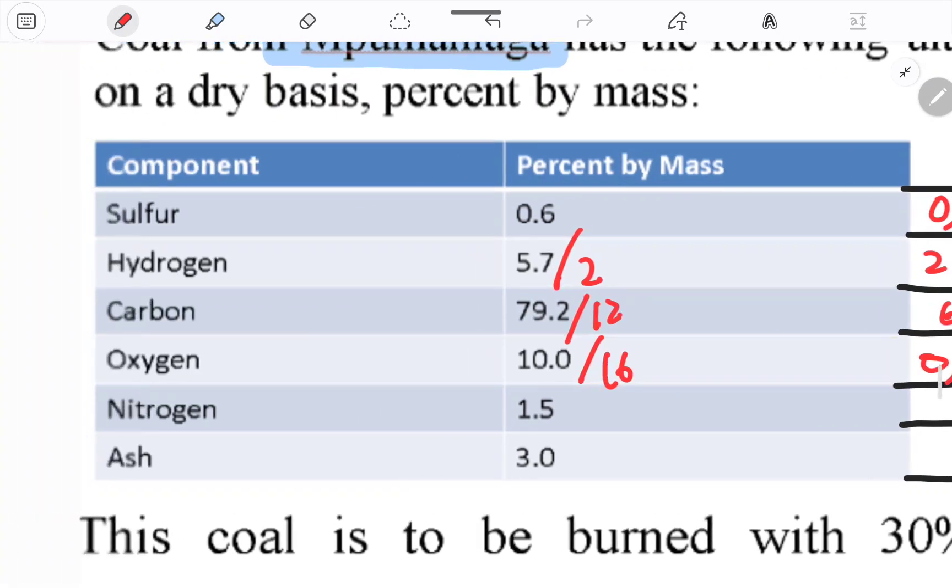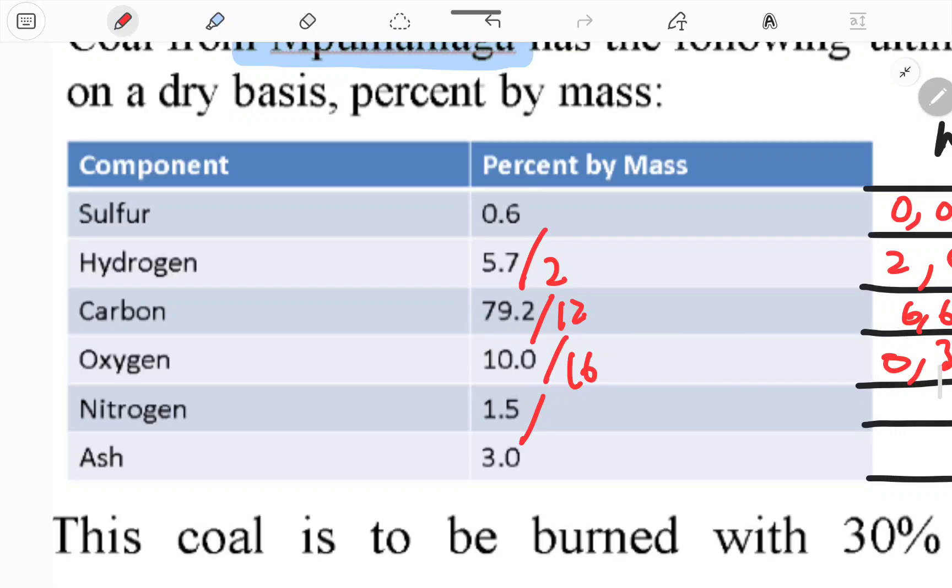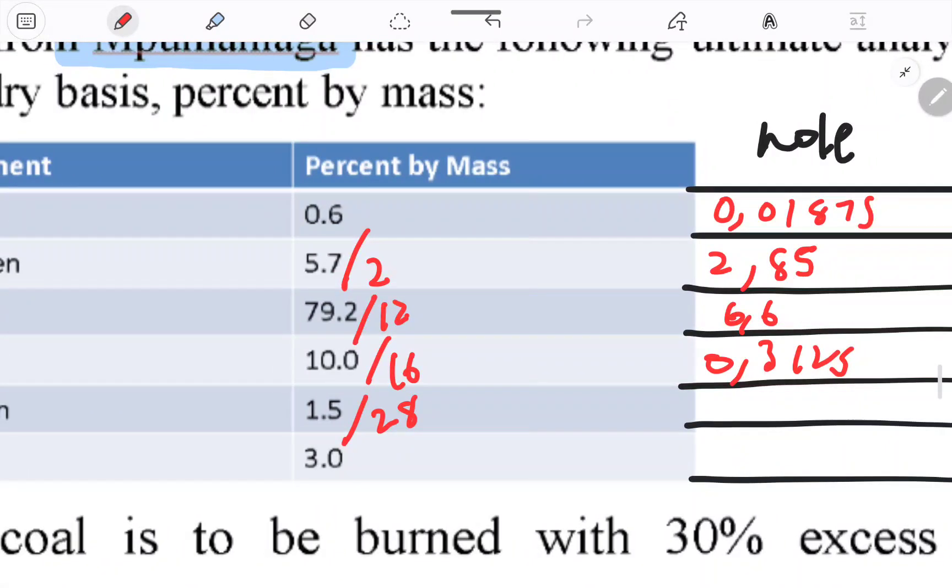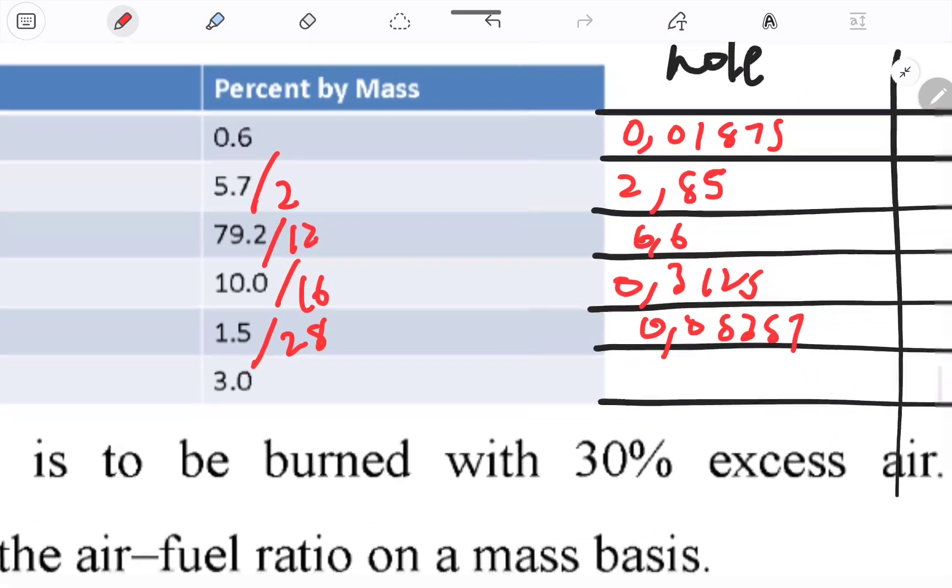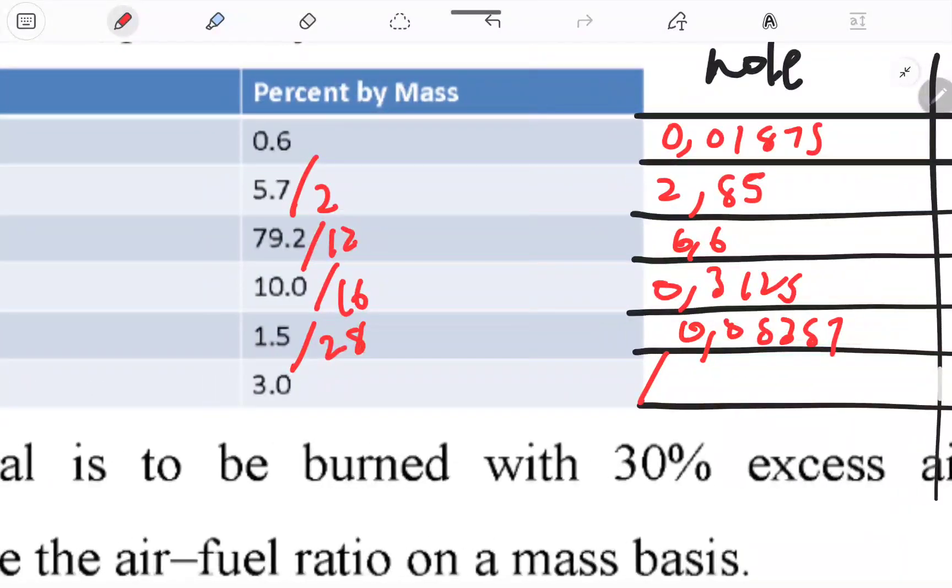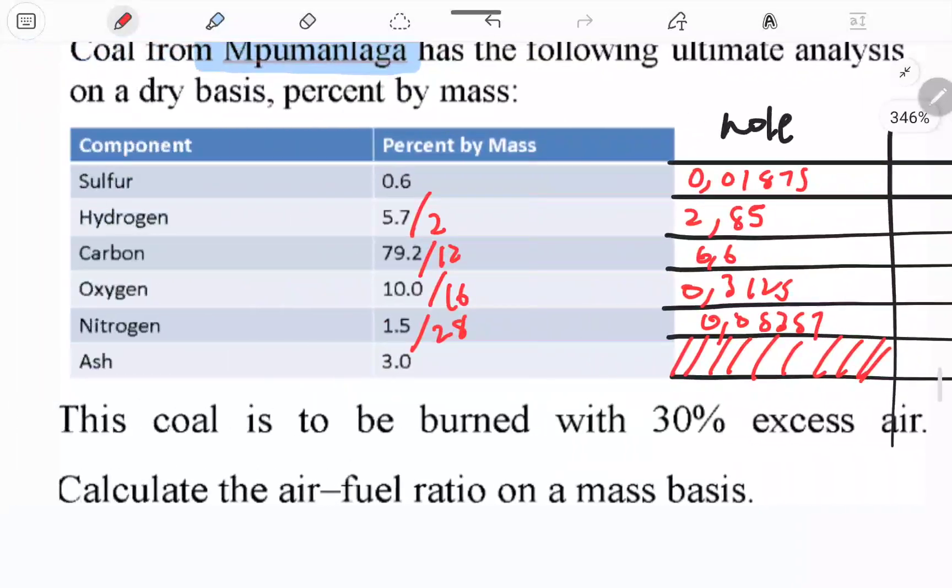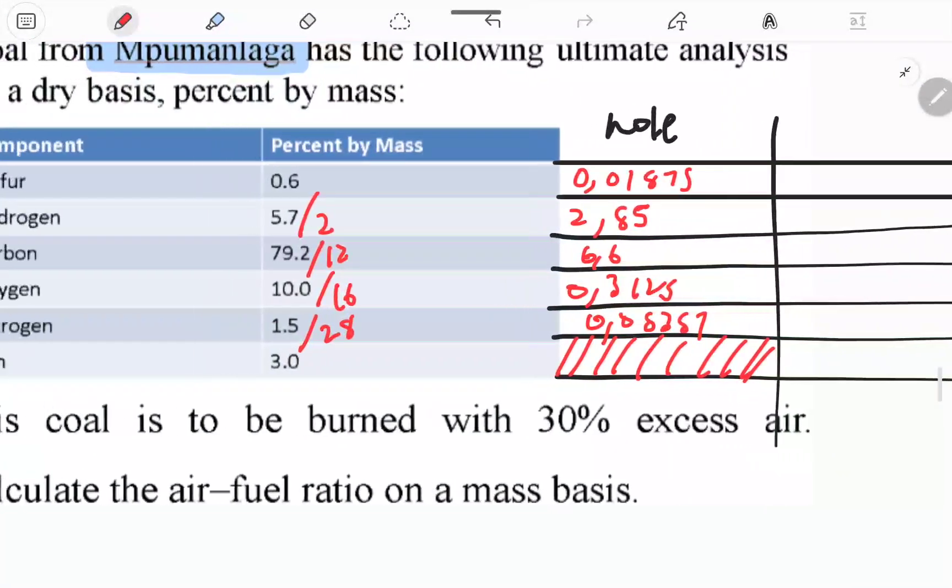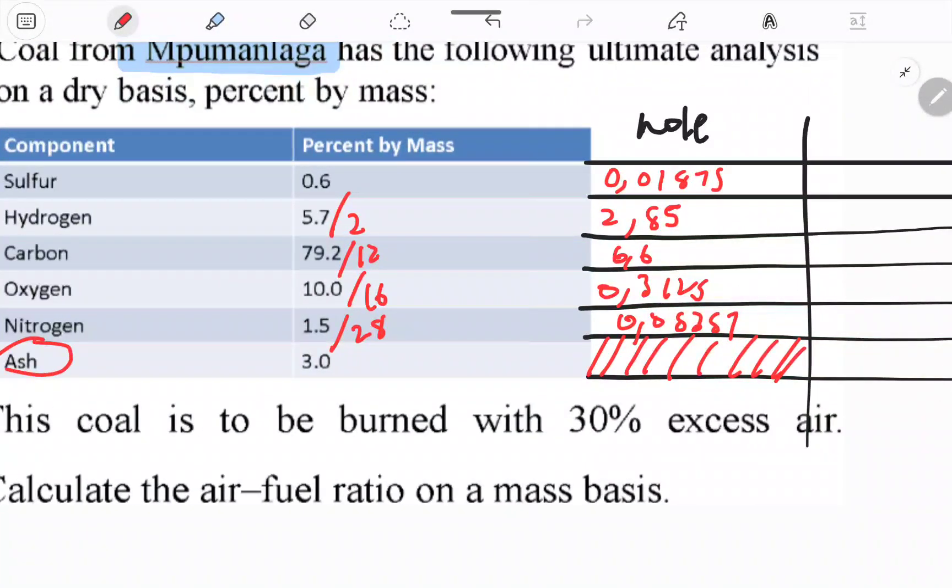Nitrogen is divided by 28, so I'm getting 0.05357. For ash, we're not saying anything. To actually take it into account, we'd have to know what is making up the ash, the same way they gave us what is making up coal.